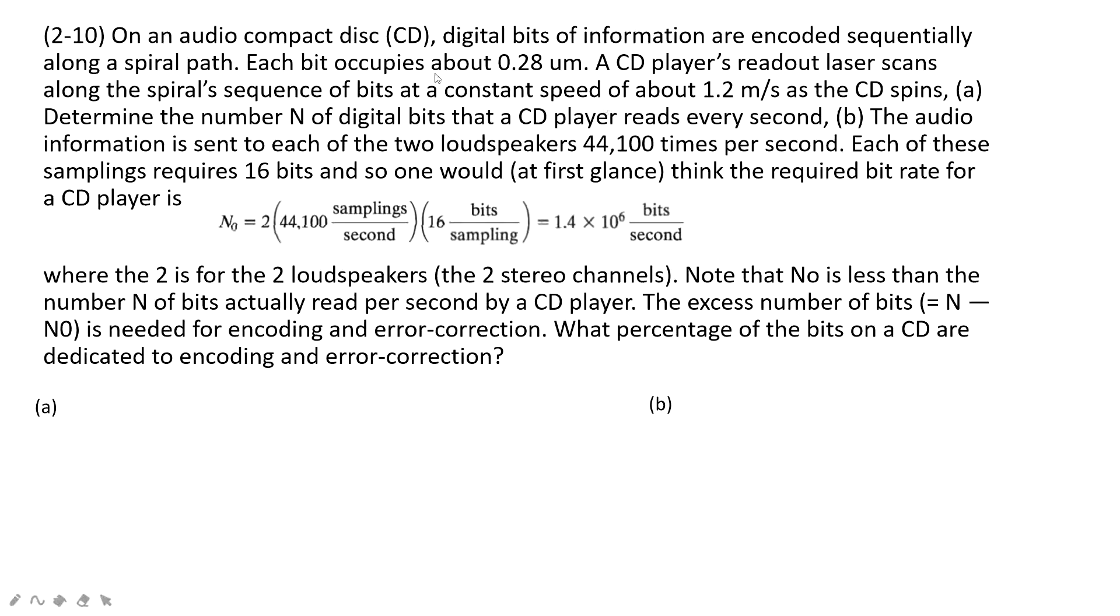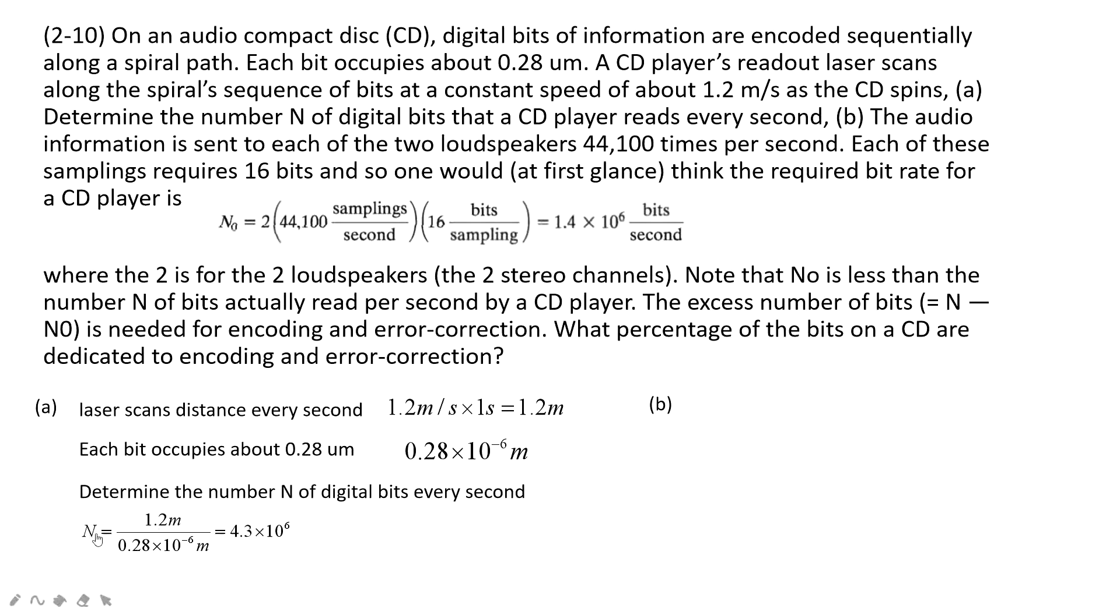This is simple because we can see each byte is just 0.28 micrometer. In 1 second, the CD player reads 1.2 meters. So the laser scans distance every second is 1.2 meters. Each byte occupies 0.28 times 10 to the power negative 6 meters. So the number of digital bytes every second - use this length divided by each length. This n is just 4.3 times 10 to the power 6.